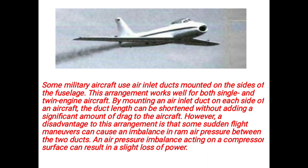Some military aircraft use air inlet ducts mounted on the side of the fuselage. These arrangements work well for both single and twin engine aircraft. By mounting an air inlet duct on each side of an aircraft, the duct length can be shortened without adding a significant amount of drag. However, a disadvantage of this arrangement is that some sudden flight manoeuvres can cause an imbalance in RAM air pressure between the two ducts, and air pressure imbalance acting on a compressor surface can result in a slight loss of power.